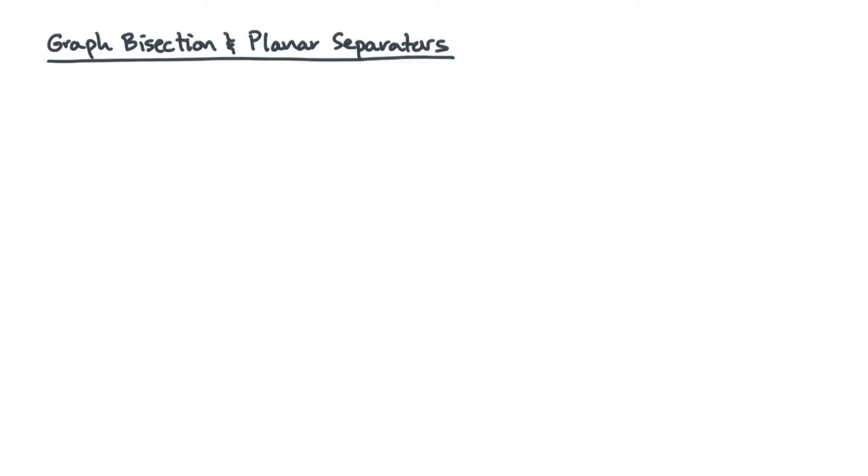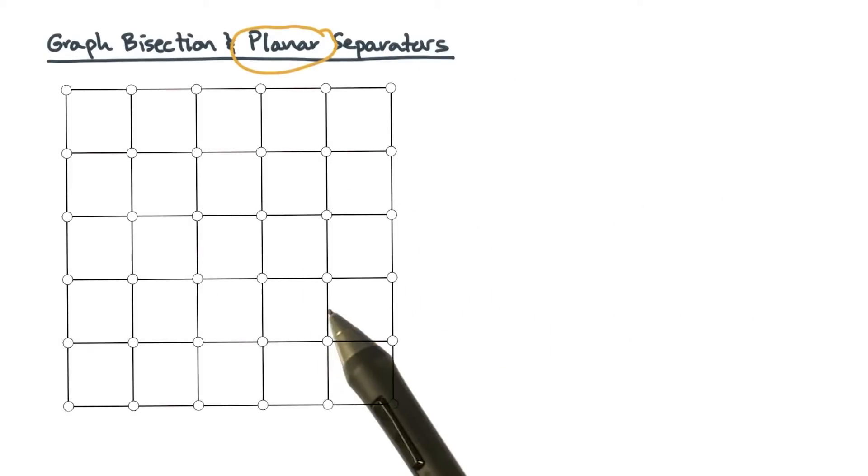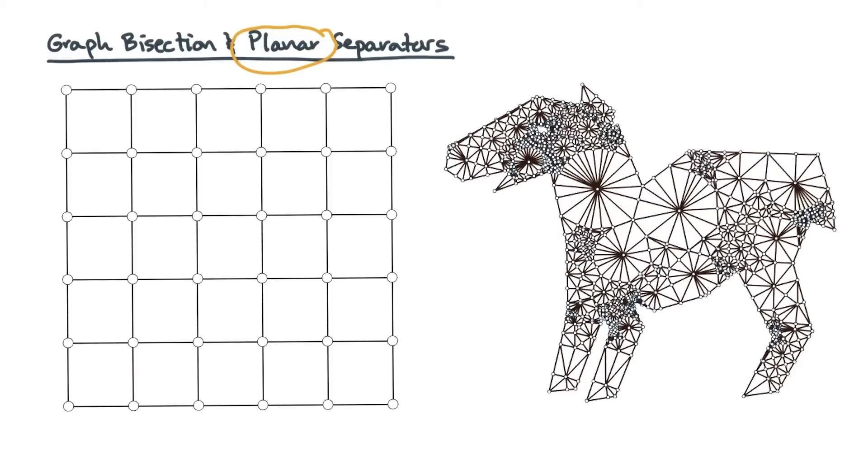Now, some graphs are special. For instance, this graph is planar. A planar graph is one that can be drawn in the plane with no edge crossings. So for instance, here's another planar graph. By the way, this thing is supposed to be a tapir.